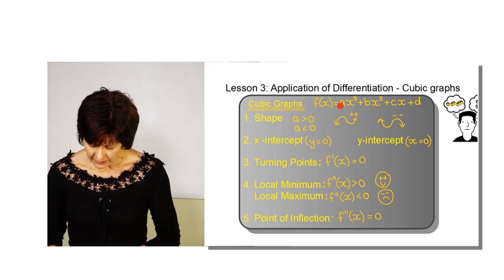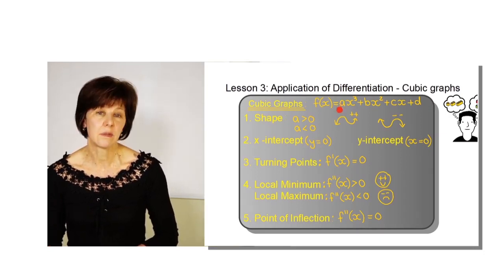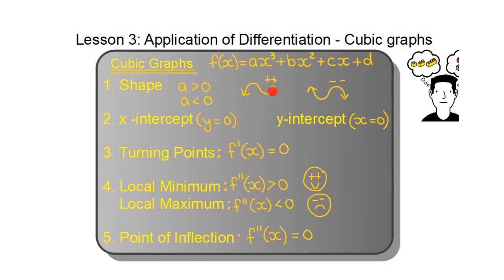If A is greater than zero — positive — I remember the smiley face shape and add a little part in front. If A is less than zero — negative — I remember the sad face shape and add a little part in front. That reminds me how the cubic graph will look.